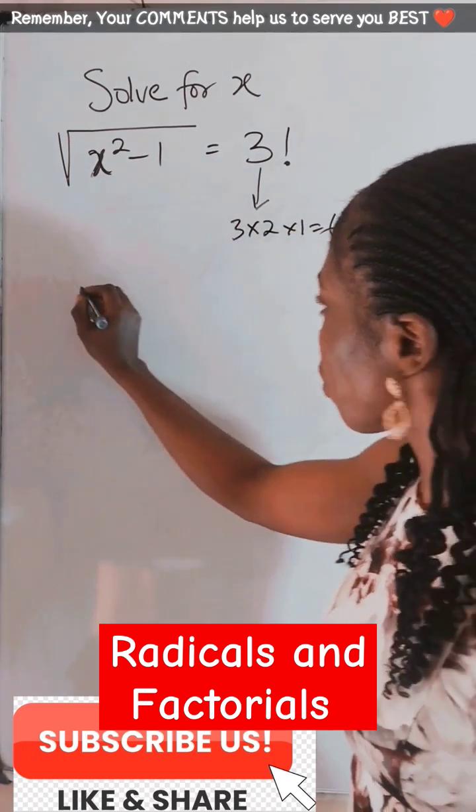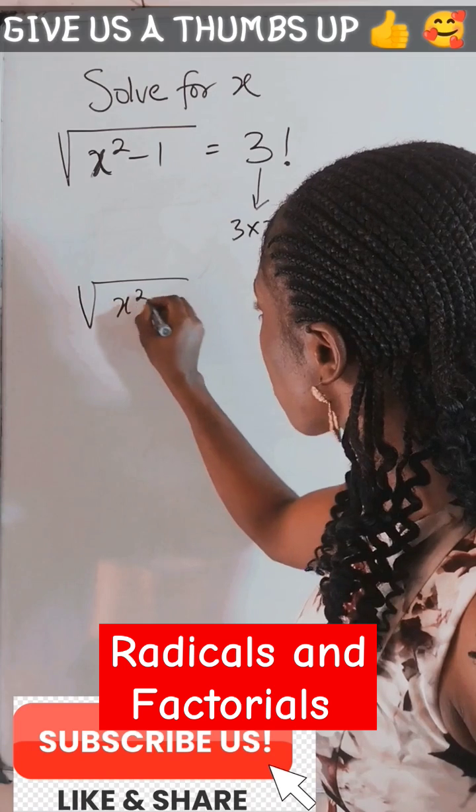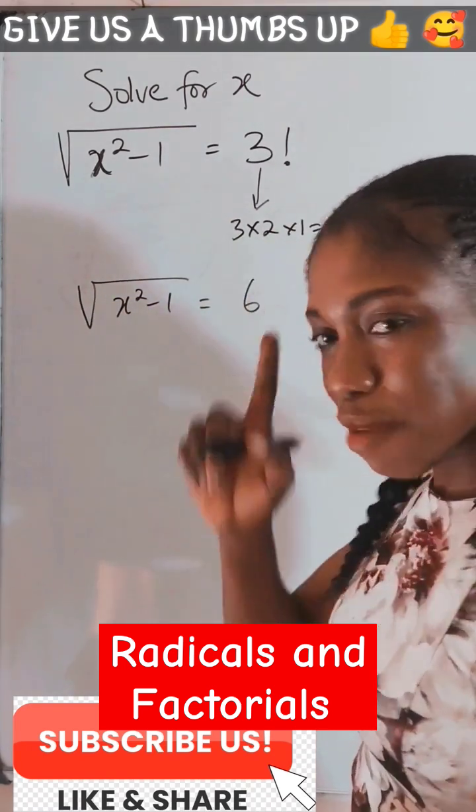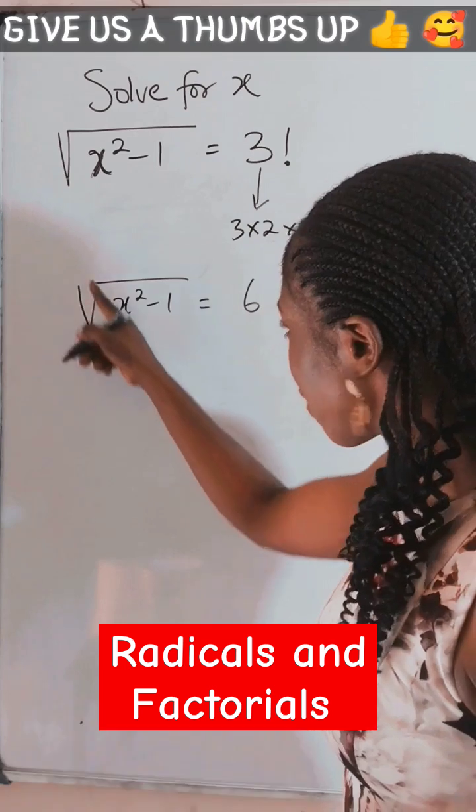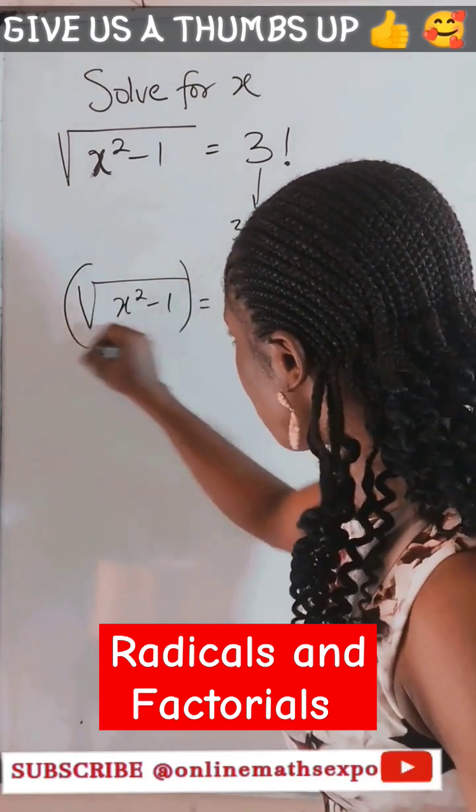So in answering this, we are going to have root of x squared minus 1 is equal to 6. Remember to find x, you remove the radical sign by squaring both sides.